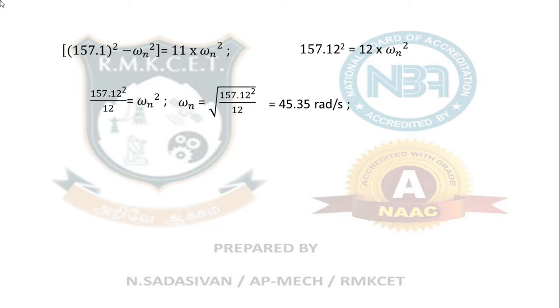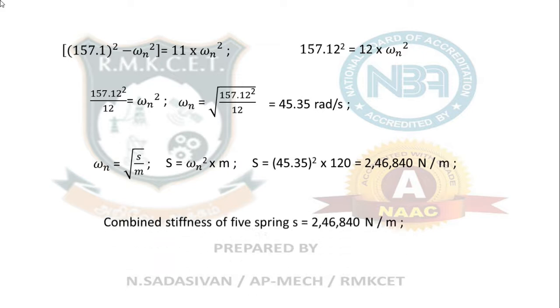If I find out the value of omega_n, it comes around 45.35 radians per second. This is the natural circular frequency of the system. I know the natural frequency equals the root of s by m, so from this find s. S equals omega_n squared times m, which comes around 246,840 Newton per meter, which is stiffness of 5 springs put together. Now divide this by 5 to get the stiffness of each spring.